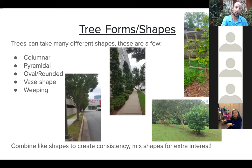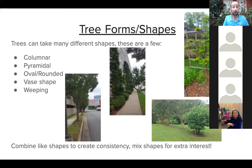Espalier is more of a topiary style of pruning. If you have a wall you want to plant against, you can espalier many trees — ironwood, apple trees, fruit trees, even magnolias. That's a different type of shape you can achieve. You can also play with these shapes next to each other, like combining crepe myrtles with a rounded evergreen.